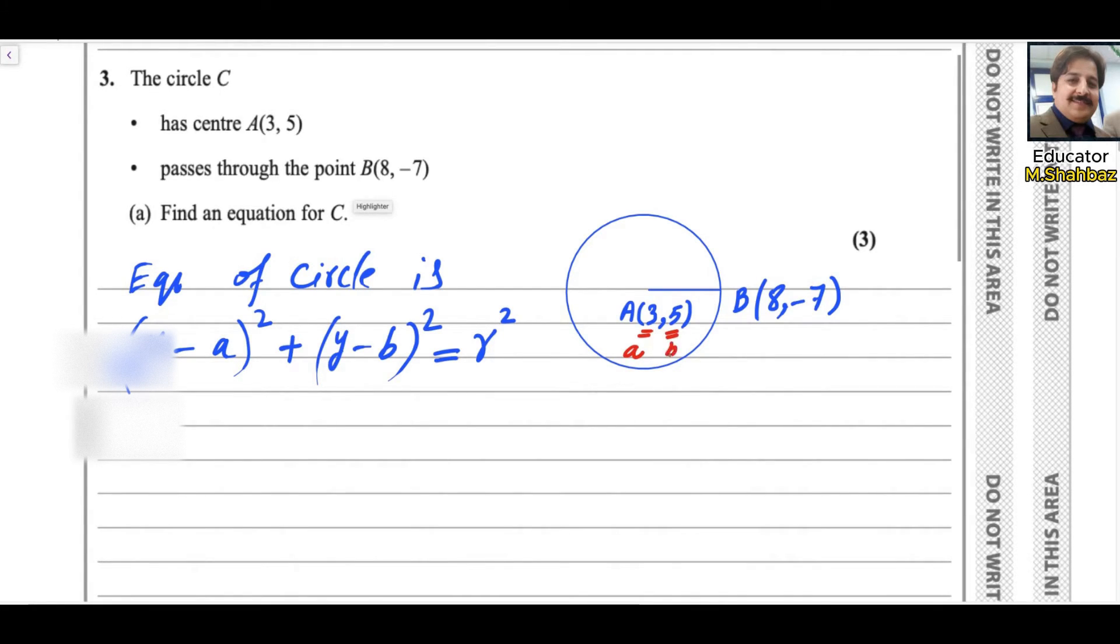So the only unknown thing is r. The radius could be found by using distance formula. We know that is √[(x₂-x₁)² + (y₂-y₁)²], so we can do that.